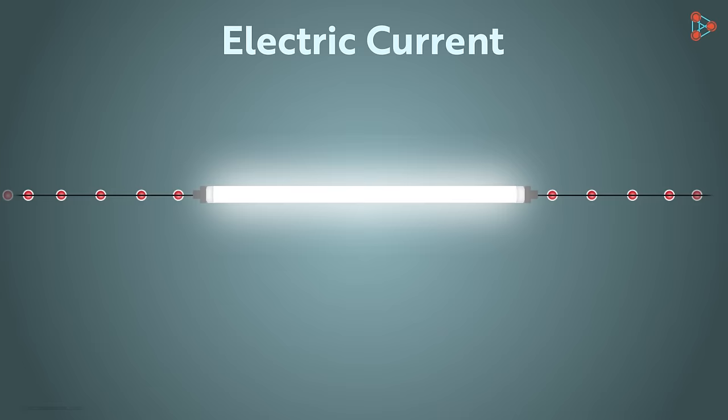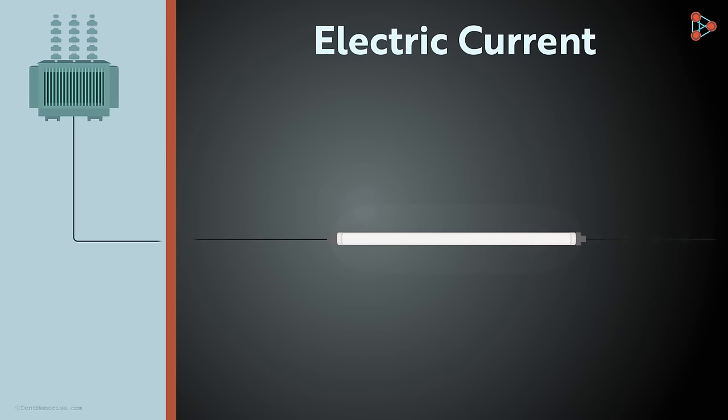The charges move in one direction in the wires because of the energy supplied to them by the transformers. So the transformer supplies energy, the charges move in a wire which in turn makes our appliances work. A flashlight also works in the same way. But here the energy is supplied by the two electric batteries.